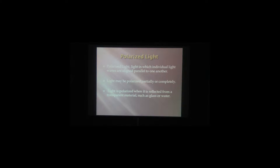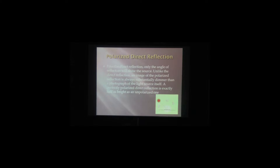Are we good with polarized light? Polarized is a type of direct reflection — it's not diffuse, it's direct. So just like direct reflection, only the angle of reflection will show the source. So if we change our angle, we're not going to get the polarized reflection. An image of the polarized reflection is always substantially dimmer than a photograph of the light source itself — that's how we can distinguish the difference between direct reflection and polarized reflection. Polarized reflection is going to be half the brightness of your light source or less.